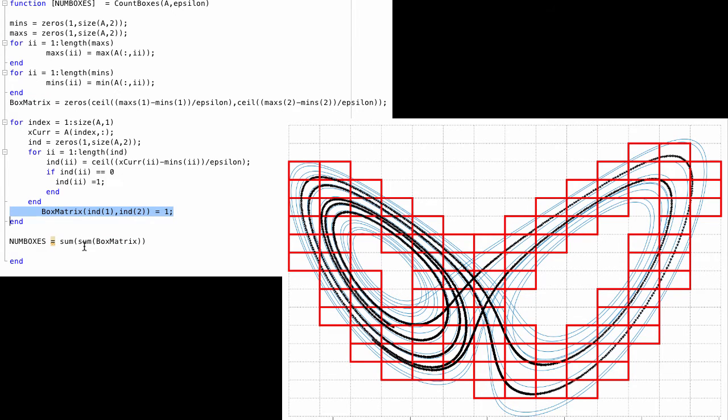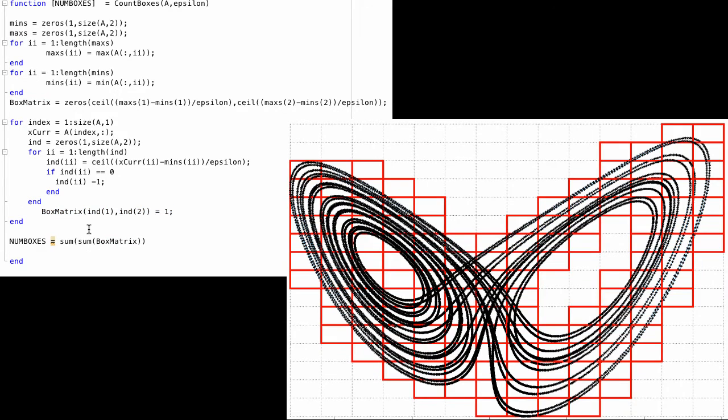Once we've gone through the entire trajectory, we'll see something like this. Here, the trajectory has been covered by the minimum number of boxes of that size epsilon needed. In the matrix notation, you have a matrix where each one of these red boxes is represented by a 1 and each one of the grayed out boxes is represented by a 0.